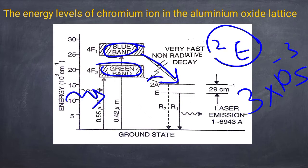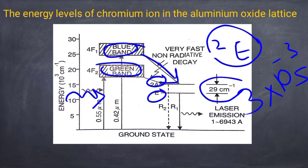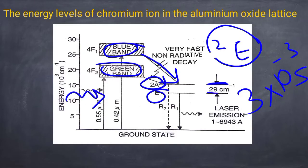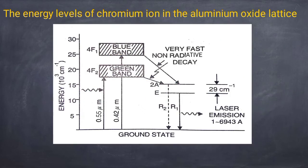The 2E metastable level is split into two sub-levels: 2A-bar and E-bar. The separation between these two sub-levels is 29 cm⁻¹. Population inversion is created between these two levels.